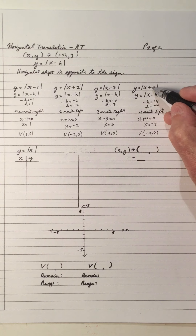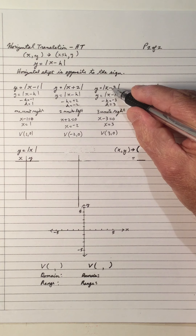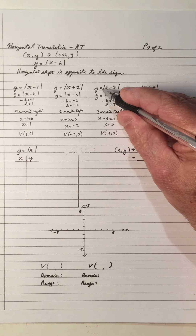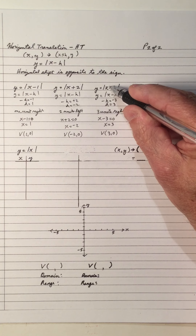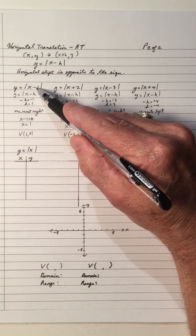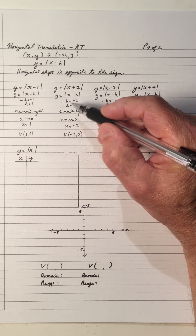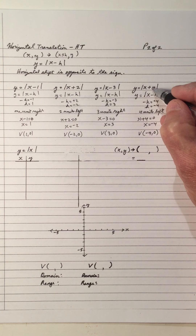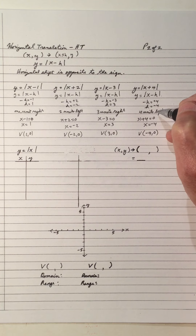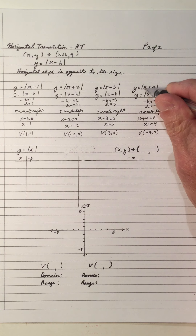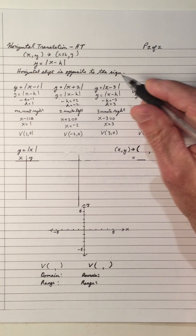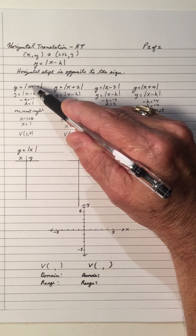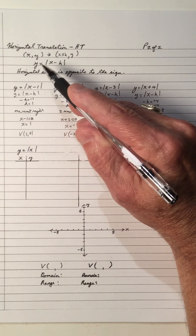Notice the pattern across all four: plus 4 in the equation gives a vertex X-coordinate of negative 4; minus 3 gives positive 3; plus 2 gives negative 2; minus 1 gives positive 1. The horizontal translation is always opposite to the sign in the equation. Minus gives a shift right; plus gives a shift left. This is because we express the shift in terms of the vertex's X-coordinate, which is always opposite to what appears inside the absolute value.